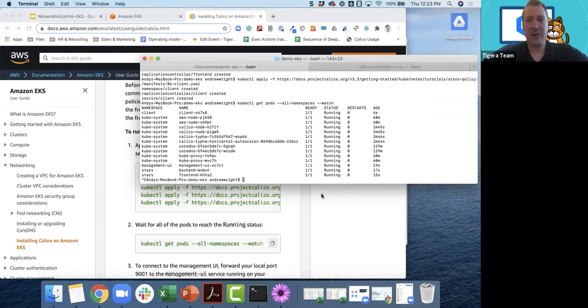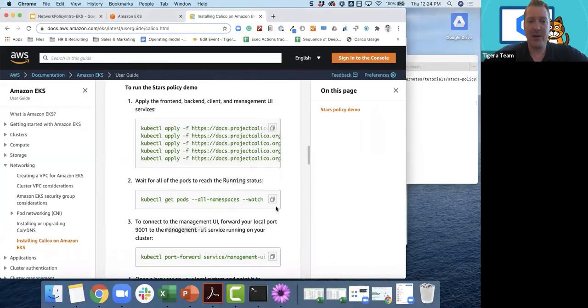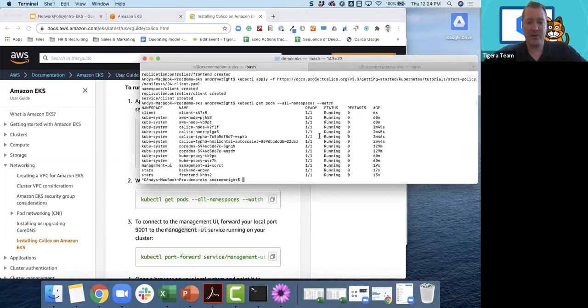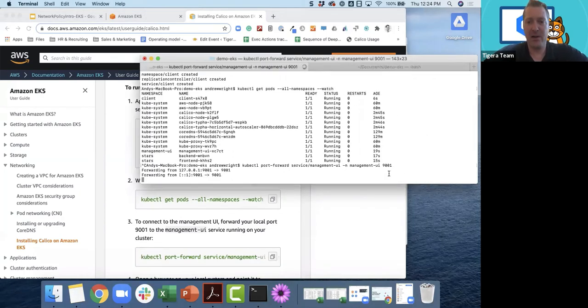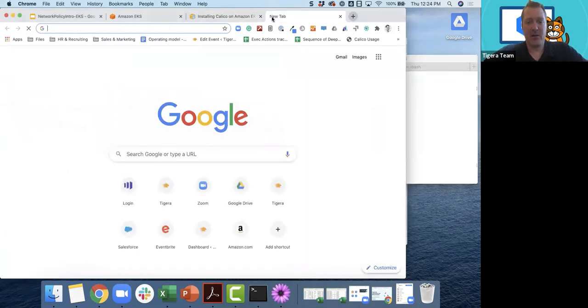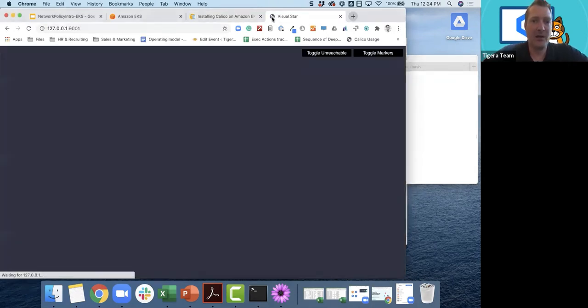So the next thing that I want to do is I'd like to do some port forwarding to connect to that management UI, so I don't have to open up all kinds of rules and everything on my cluster. There's a simple command here to help you with the port forwarding. What this will do is it's going to forward 9001 to my localhost. So I can just grab this URL here, go to my localhost. And there we go.